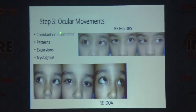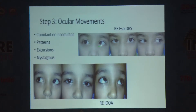After this, you need to look at the ocular movements — the complete excursions, whether there's any nystagmus, any oblique overactions, and any patterns. Here you can see an inferior oblique overaction, and there was a superior oblique interaction which is not shown here. You can also see a case of Duane's syndrome where there is an abduction limitation.